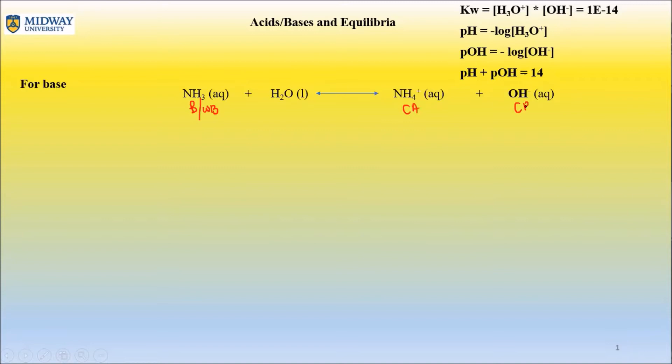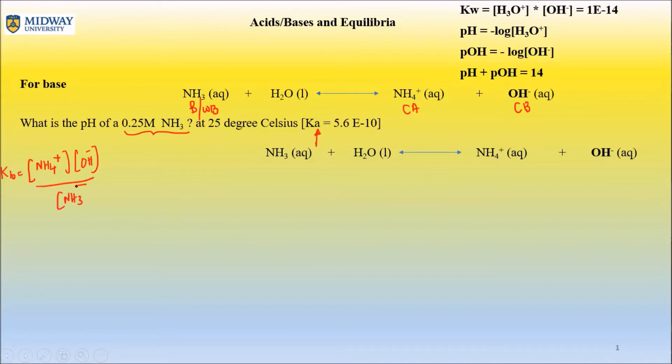Let's actually look at the problem. What is the pH of a 0.25 molar ammonia? Now got to be very careful when you want to calculate pH of a base. First you're given KA. Well I've told you if you've got OH minus you'd be doing a KB expression, right?